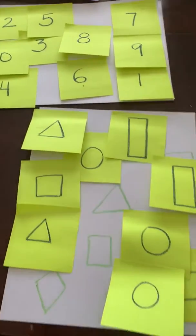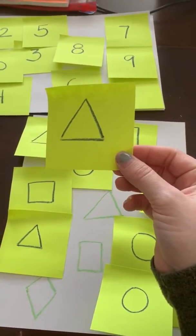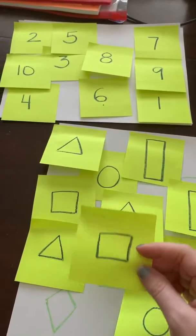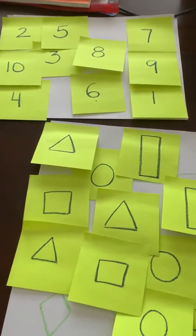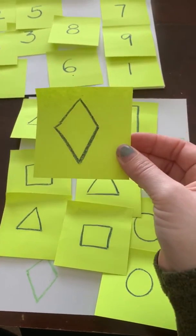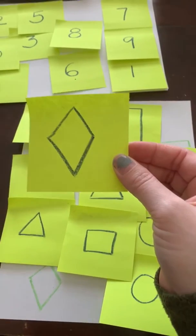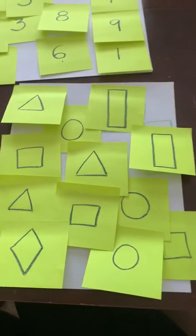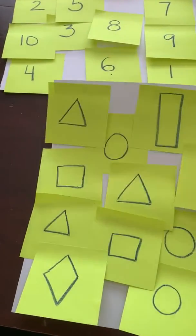Only a couple more left. Triangle. Square. Last but not least, I threw in a tricky one. Looks like a square, kind of, but it's called a diamond. Look at that. That was so much fun.